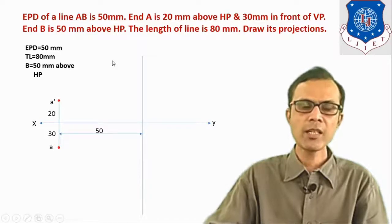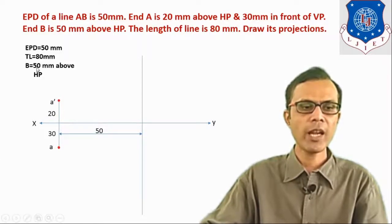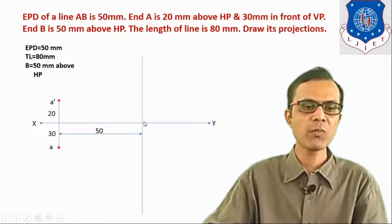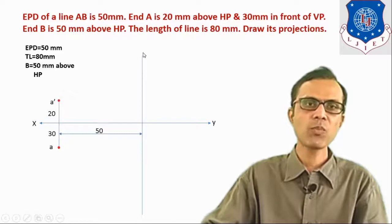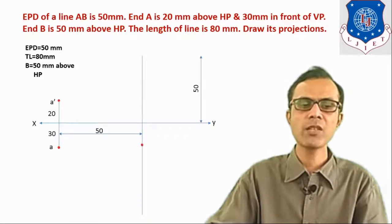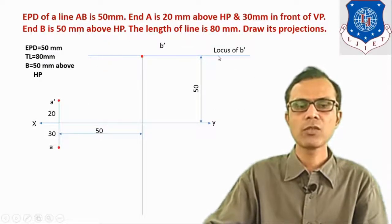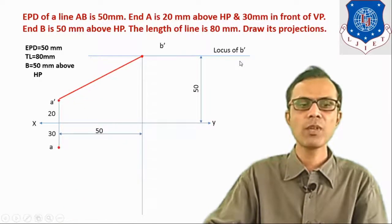The next data given is that point B is 50 mm above HP. Above HP means above the XY line, so on the projector for B, take a distance of 50 mm above XY line and mark that point. That point is B'. From B' draw a horizontal line as the locus of B'. So A'B' is the front view.